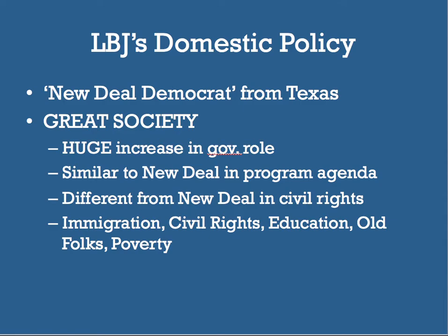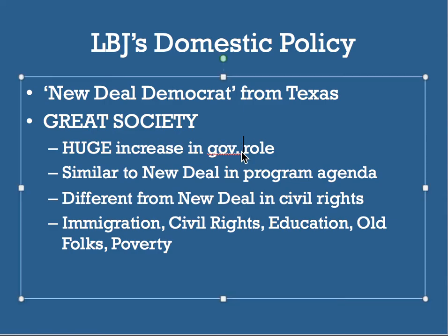LBJ is a New Deal Democrat — a big government, huge FDR fan — and his domestic policy is called the Great Society. It represents a massive increase in the government's role, very similar to the New Deal in using the federal government as a lever to fix society's problems, but different in that it actually faces civil rights, whereas FDR's New Deal largely ignored African Americans. The big platforms LBJ wants to fix in his Great Society are immigration, civil rights, education, care for old people, and poverty in general.